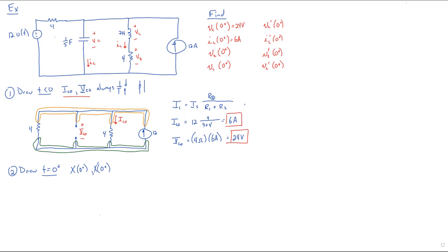So let's draw it at time zero plus. At time zero plus, remember, we know what the voltage is across the capacitor. So since we know that voltage across the capacitor can't change instantaneously, it's got to be 24 volts, we're going to draw our capacitor as a voltage source. We've already figured out what that is in step one.